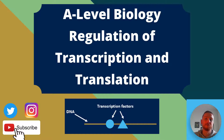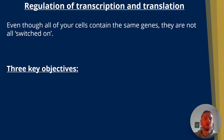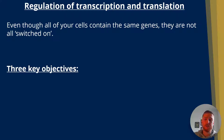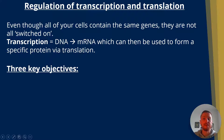Like, comment and subscribe and let's get into the video. So the regulation of transcription and translation. Even though all of your cells contain exactly the same genes, they're not all switched on. That'd be a massive waste of resources when you create proteins that the cell doesn't actually need, and it's a good thing because we don't want hair growing out of the corneas of our eyes, for example. Now transcription is where DNA is made into mRNA which then can be used to form a specific protein via translation.